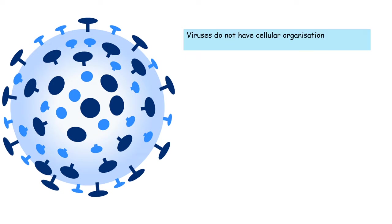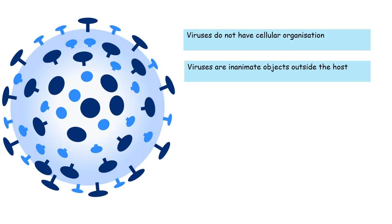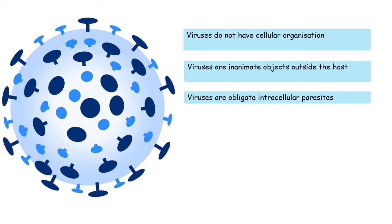Let's talk about a few quick features of viruses. They are inanimate objects — they don't have a cellular organization — and when they are outside of the host, they are pretty much inanimate and don't have a life, but they come to life when they get inside the host, pretty much like zombies. Viruses are obligate intracellular parasites.